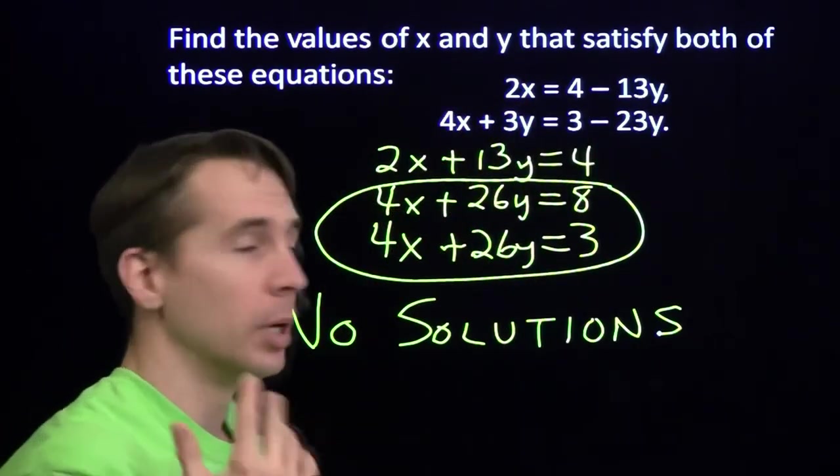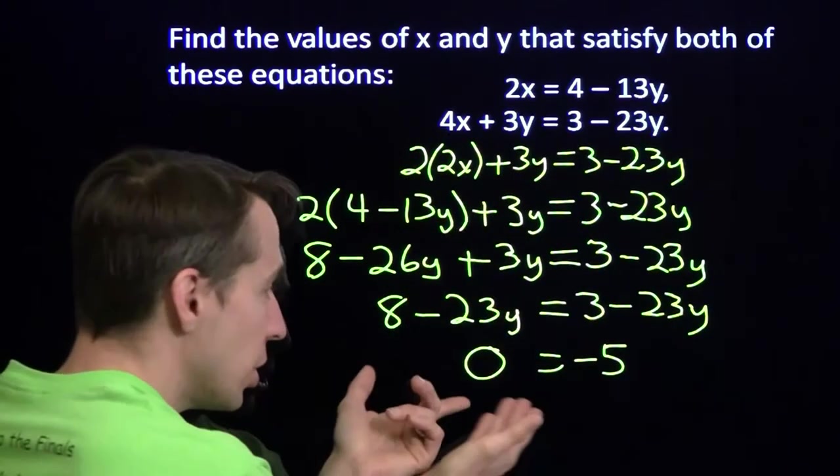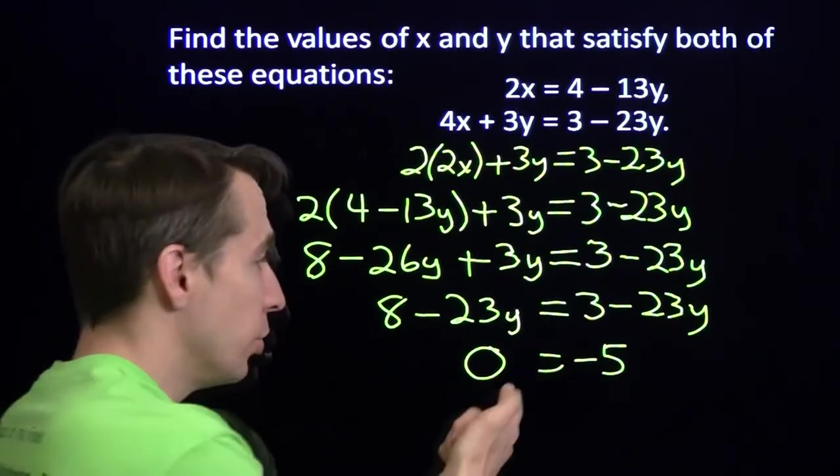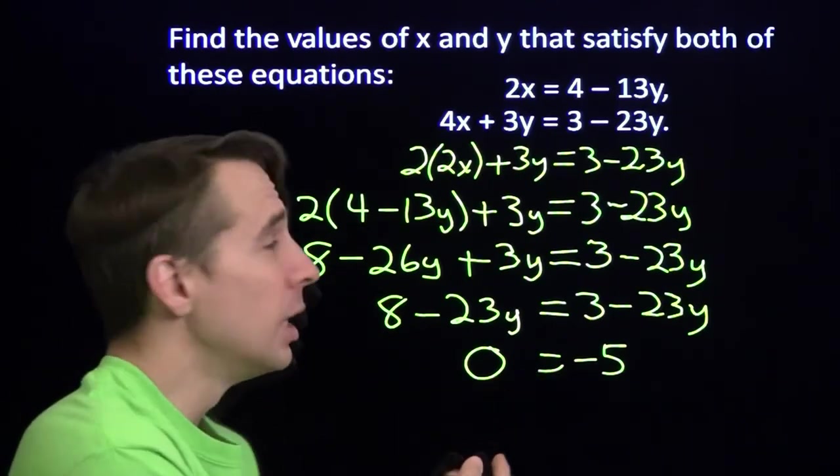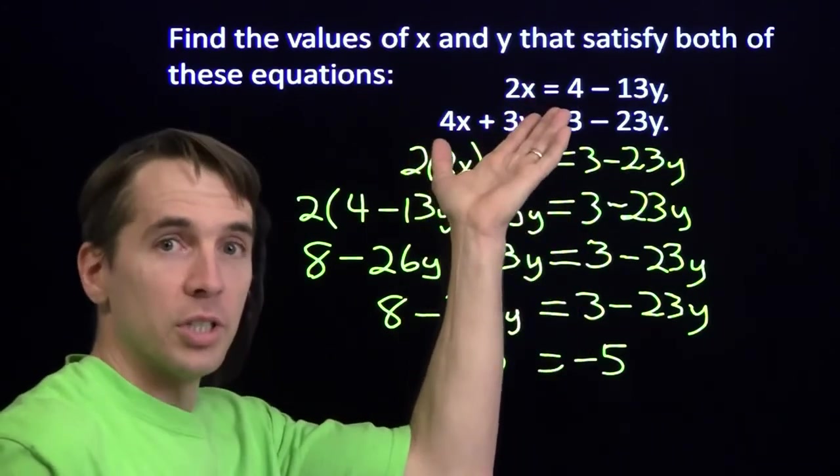There's no way to satisfy both of them. So if you're plugging away at a system of equations, you do a clever substitution, and you come down to an equation like this that can never, ever be true. This can't ever possibly be true. Then, well, your conclusion is there are no solutions to your system of equations.